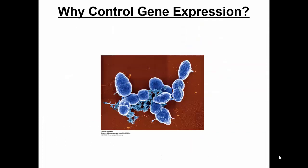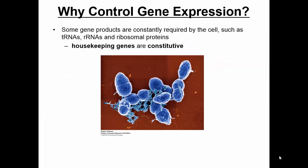So why control gene expression? Well, some genes are always on — they're always being transcribed into RNA, and if possible, always being translated into proteins. Those genes are called housekeeping genes. Just like you always want to keep your house clean, you always want to have these genes expressed. These are things like tRNAs, rRNAs, and ribosomal proteins. We call their expression constitutive, meaning it's always on.